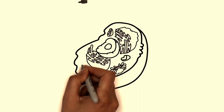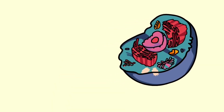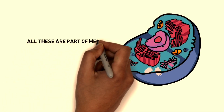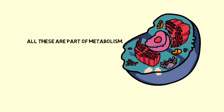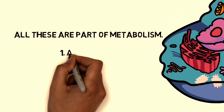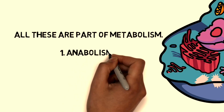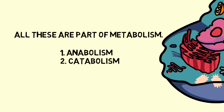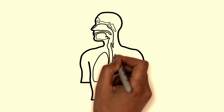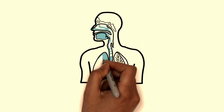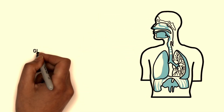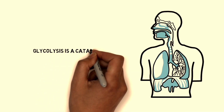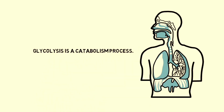All the bodily reactions are happening inside our cell, and all these are part of metabolism. Metabolism means the process by which chemical reactions take place in our body in order to change food into energy. This can be of two types: anabolism and catabolism. Anabolism is construction and catabolism is destruction. Glycolysis is a catabolic process happening in our body.